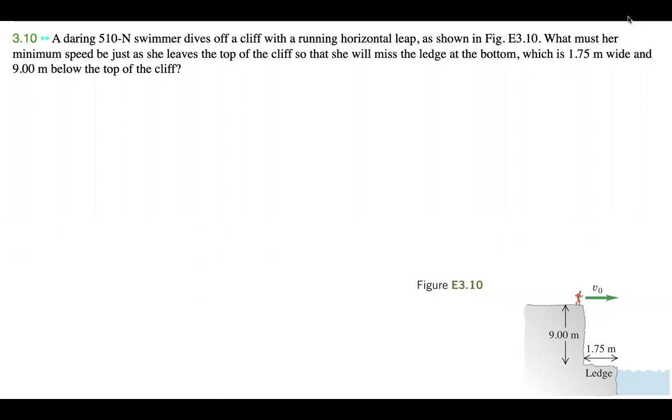A daring 510-Newton swimmer dives off a cliff with a horizontal leap as shown in figure E3.10. What must her minimum speed be just as she leaves the top of the cliff so that she will miss the ledge at the bottom, which is 1.75 meters wide and 9 meters below the top of the cliff.